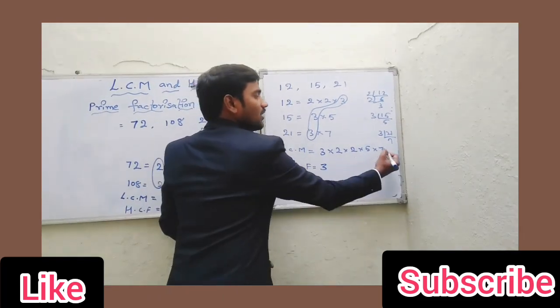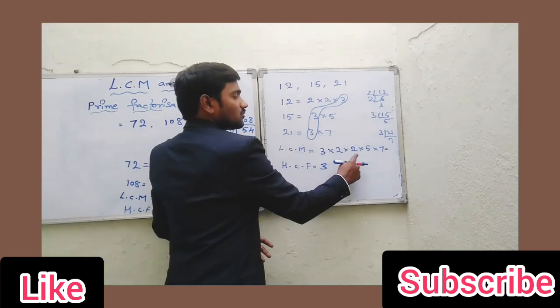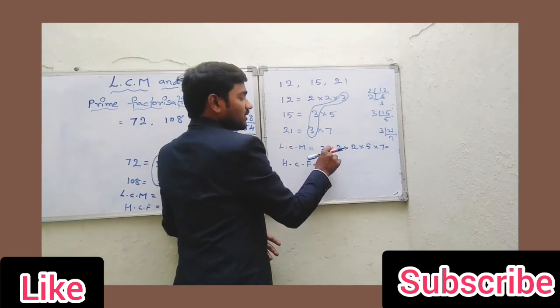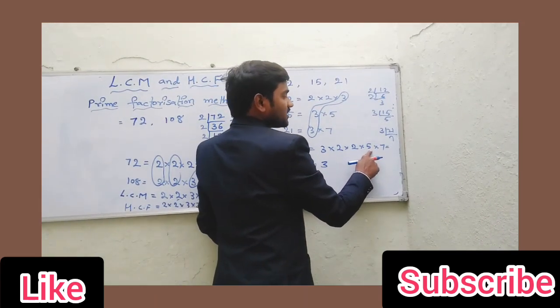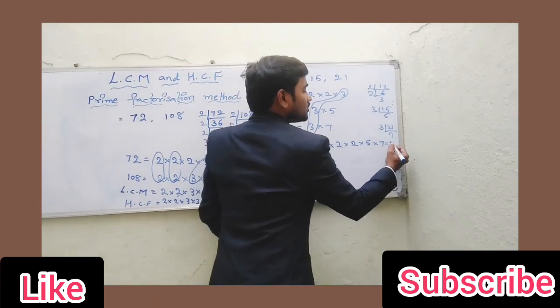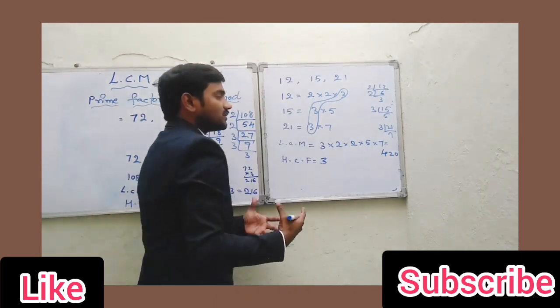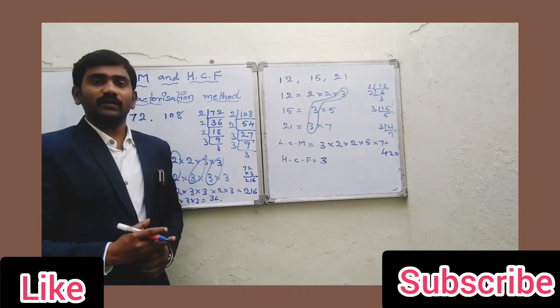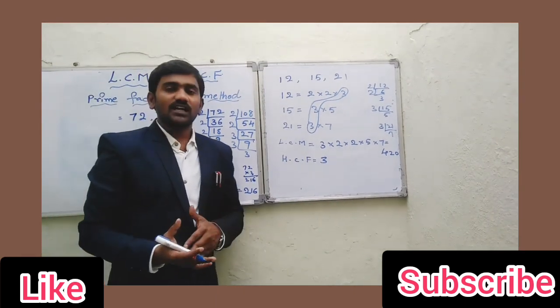Calculating the LCM: 2 × 2 = 4, 4 × 3 = 12, 12 × 5 = 60, 60 × 7 = 420. So the LCM is 420.